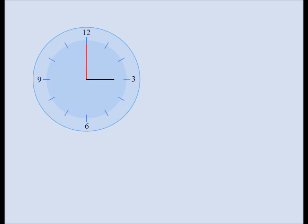Let's do very similar math with the hour hand. We know that the hour hand sweeps an angle of 30 degrees — that's because 30 plus 30 plus 30 equals 90. So the hour hand sweeps 30 degrees every 60 minutes. Take 30 degrees divided by 60 and you get 0.5 degrees. So the hour hand sweeps an angle of 0.5 degrees every minute.